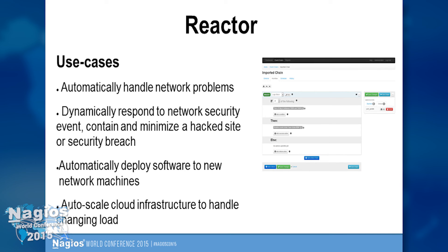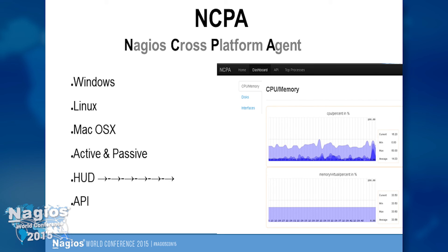Some Reactor use cases: automatically handle network problems, dynamically respond to security events, deploy software to new network machines, or autoscale your cloud infrastructure. I also wanted to mention NCPA — the Nagios cross-platform agent. It works on Windows, Linux, and Mac OSX, monitoring actively and passively, with a heads-up display showing real-time graphs. A lot of NCPA's power comes in its check API, which is a very powerful way to define commands for things you want to check. It's also typically extremely easy to install and tends to just work.